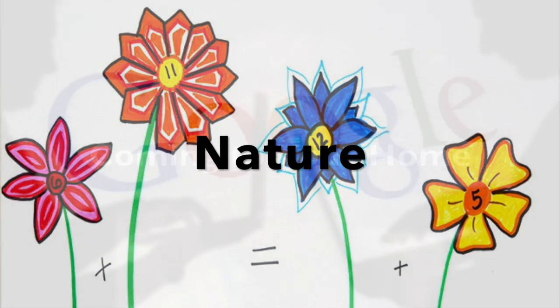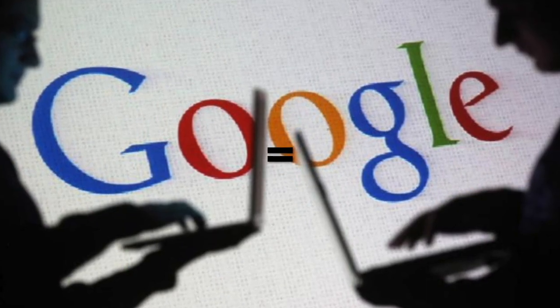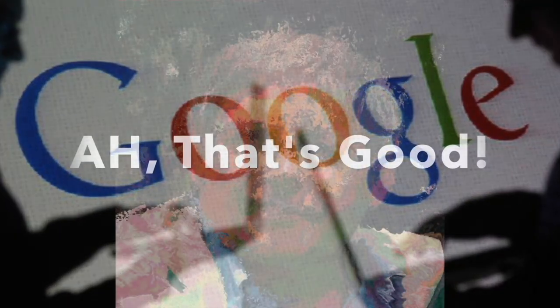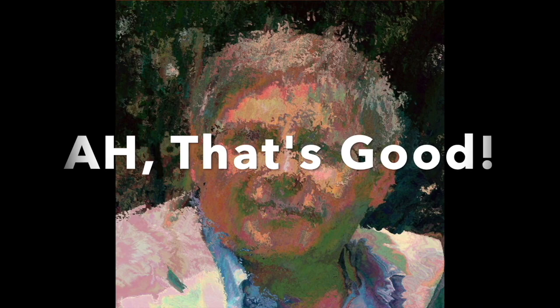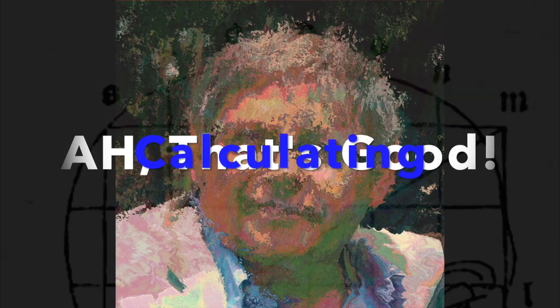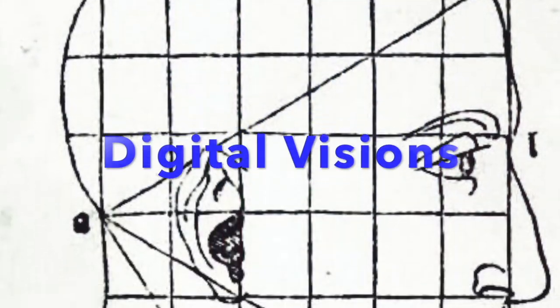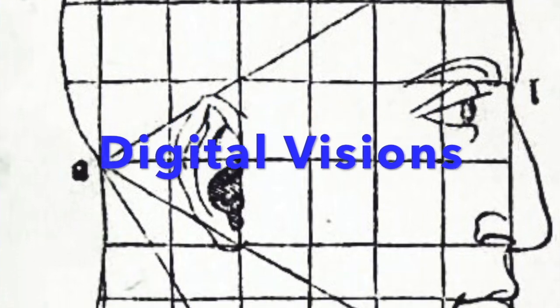Approximately a Googol to the 360,000th power. I do this by loading images — initially digital photographs — into my system, then systematically transforming them by varying the input values to the painting program. Images can be hybridized with each other and re-transformed any number of times.